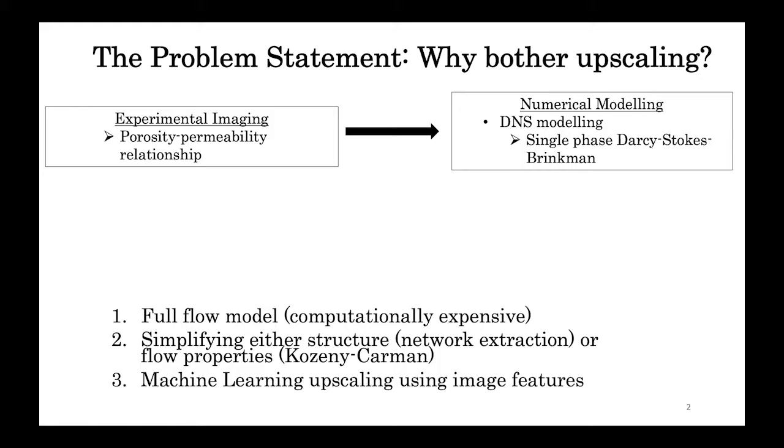However, this method becomes much more difficult as both the amount of imaging data and the complexity of our model increases. So what if your image domain is both large and complex? You have two choices. One, you can solve the full flow model on the image, which might be computationally slow or impossible, taking a million years or so.